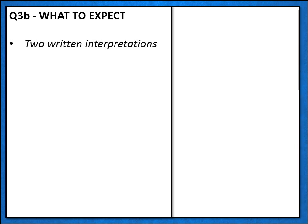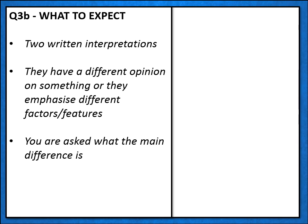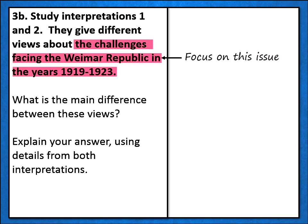On question 3b, here's what to expect. You're going to be given two written interpretations, and they'll have a different opinion on something, or they might emphasise different factors or features. And your job is to say what the main difference is between them. Here's an example of a question 3b: 'Study interpretations 1 and 2. They give different views about the challenges facing the Weimar Republic in the years 1919 to 1923.' Instantly, I'm going to highlight the focus of the question — in this case, it's the challenges facing the Weimar Republic.